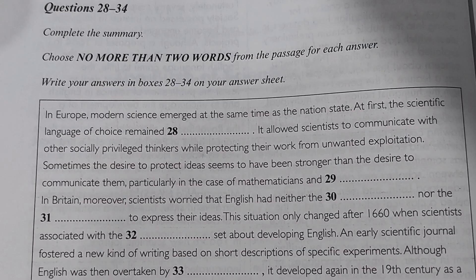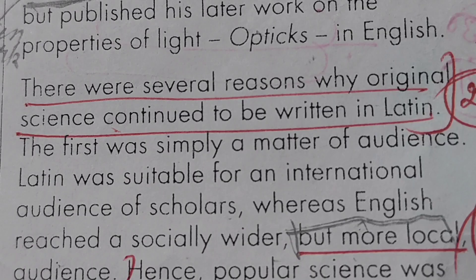Questions 28 to 34 are to complete the summary. In Europe, modern science emerged at the same time as the nation-state. At first, the scientific language of choice remained blank. Jab Europe mein modern science emerged hui to, shuruat mein logon ko pasand kaun si scientific language rahi? There were several reasons why original science continued to be written in Latin.